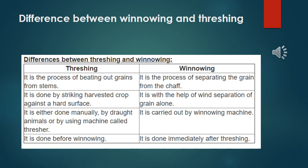Point three for threshing: it is either done manually, by draught animals, or by using a machine called a thresher. Winnowing is carried out by a winnowing machine. Last point for threshing: it is done before winnowing. And winnowing is done immediately after threshing. So these are the differences between threshing and winnowing.